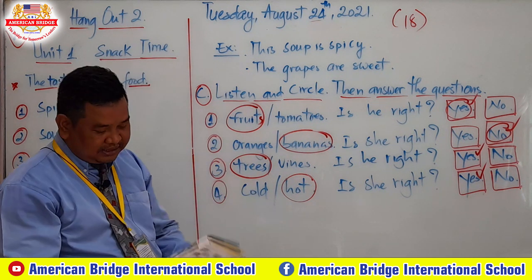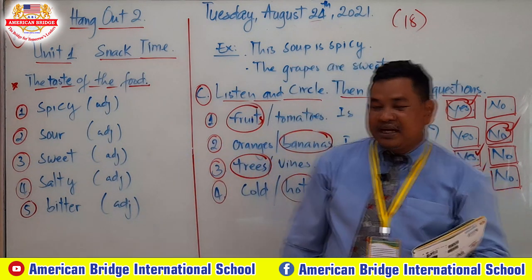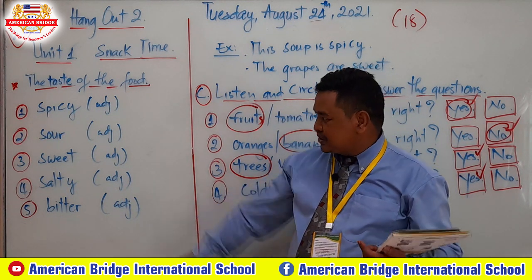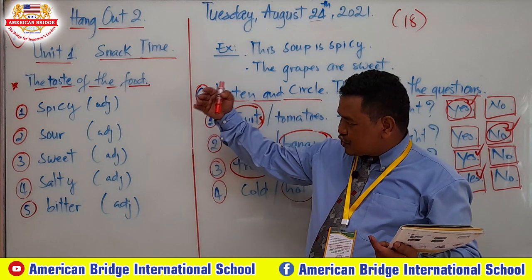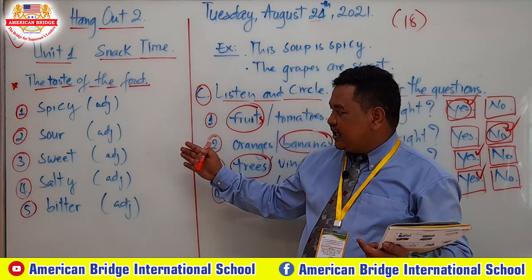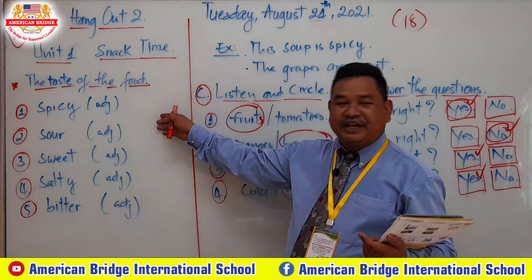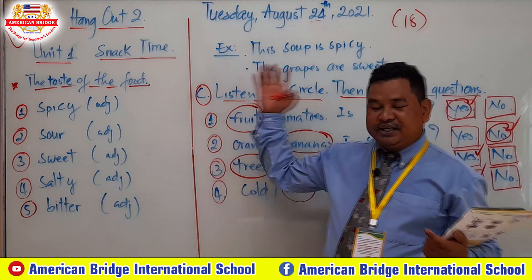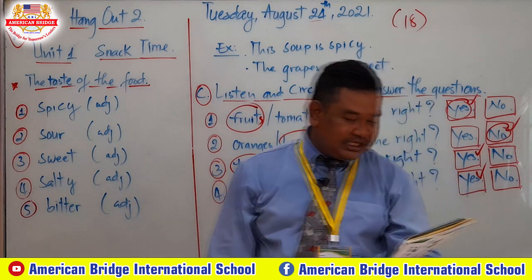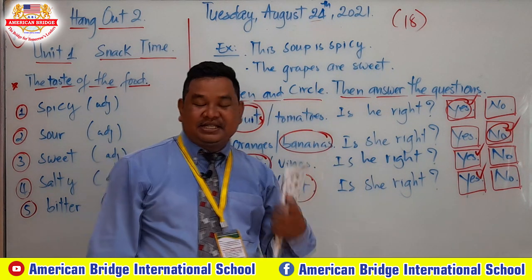I hope that you can understand everything from this second session. For the first part, you have to know about the taste of food: spicy, sour, sweet, salty, bitter. I hope that you can find the meanings in a dictionary by yourself. I gave you the word function already, and you can give the teacher examples. And for page 18, Part C: listen and circle the correct word, then answer the questions based on your listening.